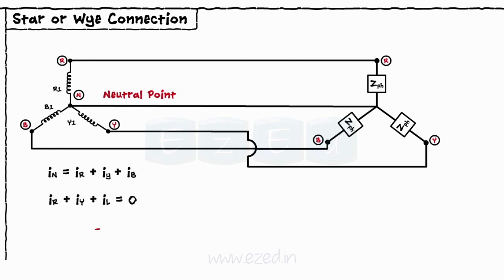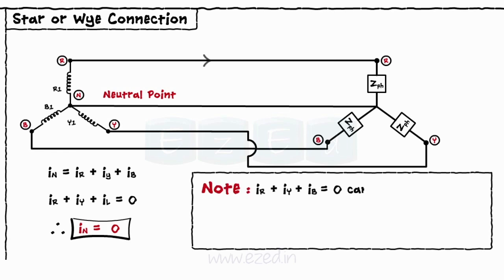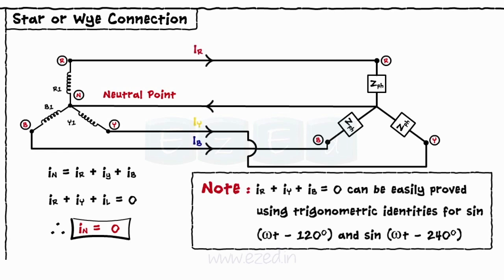For the balanced system, the current flowing through the neutral wire is always zero. Thus we can easily remove the neutral wire from the system.